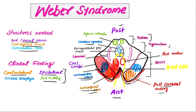On the ipsilateral side, due to paralysis of the third cranial nerve, there will be ptosis, mydriasis, and external strabismus or squint. There will also be a fixed dilated pupil due to damage to the parasympathetic fibers of the third cranial nerve.